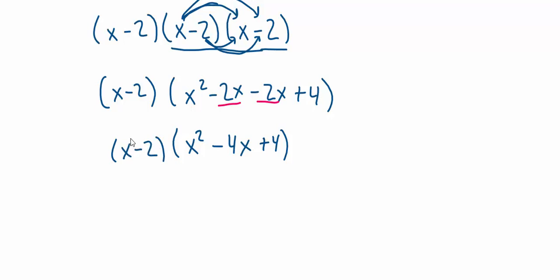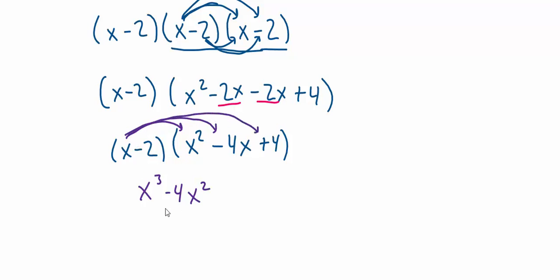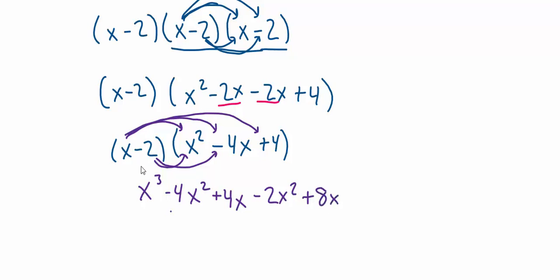First, ignoring the subtract 2, I distribute x to these three terms. x times x squared would be x to the third because you add exponents — 1 plus 2 is 3. Multiplying x to the next term, I get minus 4x squared, adding exponents 1 and 1 to give 2. And then x times 4 is 4x. Done distributing the x. Now I pretend the x isn't there and distribute the negative 2 to the three things. Negative 2 times x squared would be negative 2x squared. A negative times a negative is a positive, so we get plus 8x. And then negative 2 times positive 4 gives you negative 8, written as subtract 8.